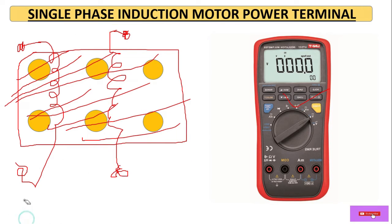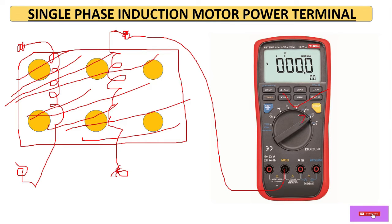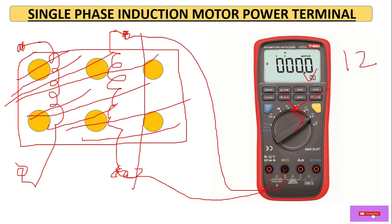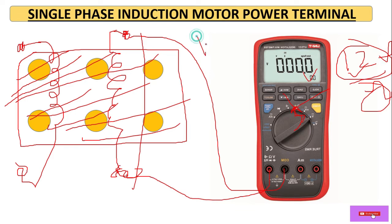To identify running and starting windings we have to check the resistance value of each winding. Set the multimeter knob to resistance (ohm) mode. Connect the probes across the first winding pair — you will find an ohm value. Suppose this is 12 ohms; the value may vary according to the pump and motor capacity. So here we assume 12 ohms for the first winding.